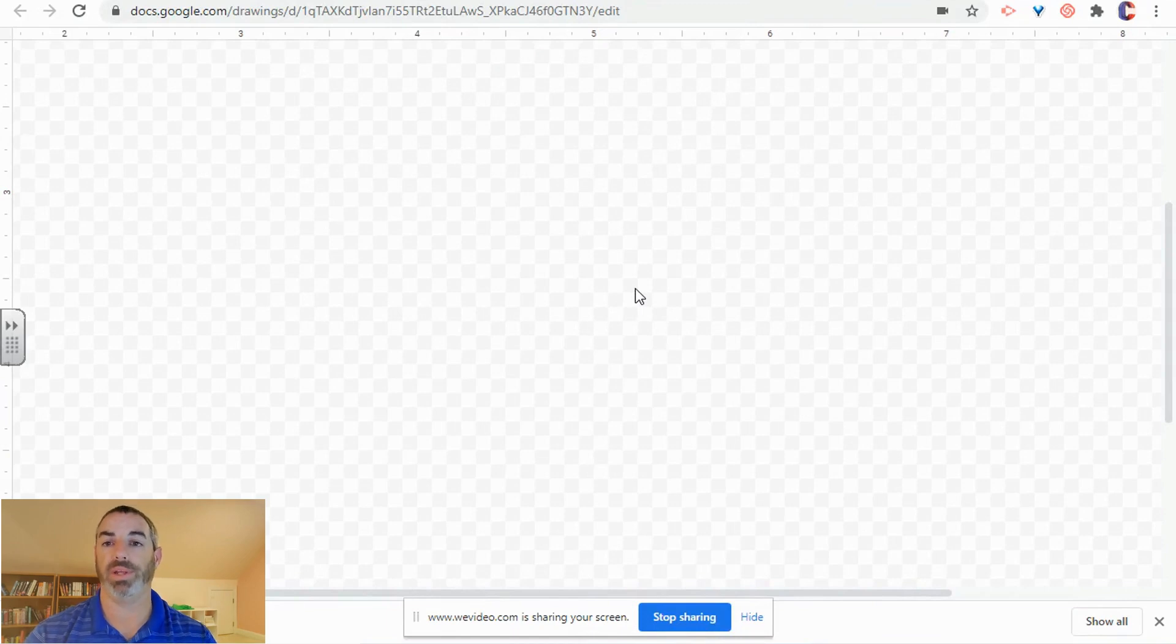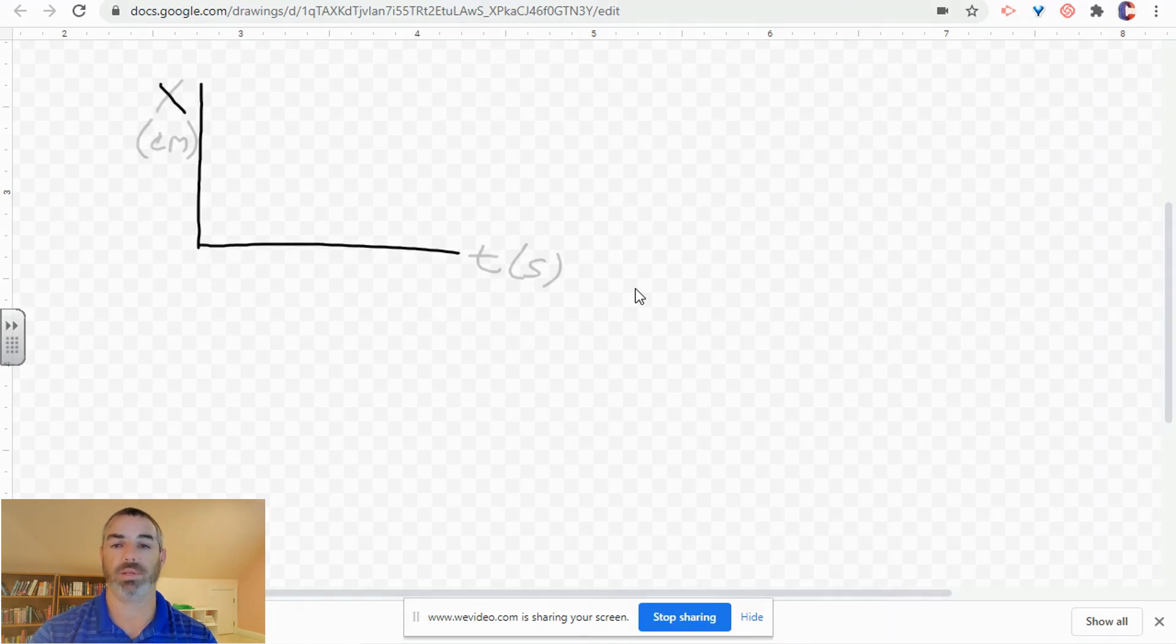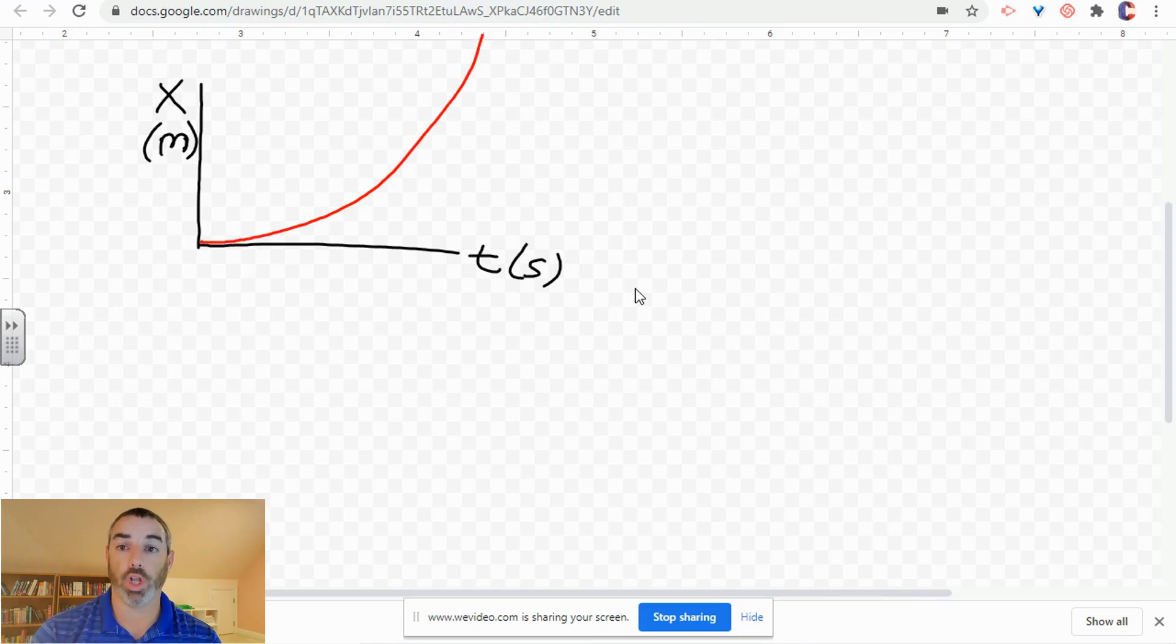We've finished collecting our data, now it's time to create a graph. We're going to plot a graph of position on the vertical axis and time on the horizontal axis. Now you may have measured in centimeters, which you plotted the graph in centimeters and that's fine, but we want to start using the International System of Units, or System Internationale, SI units. We're going to change centimeters to meters. Centi means 100, so there's 100 centimeters in a meter.